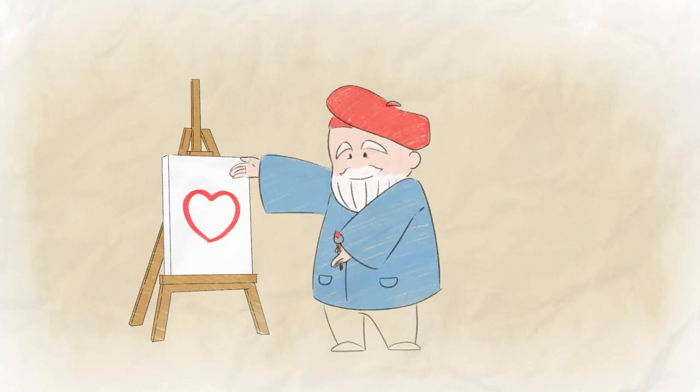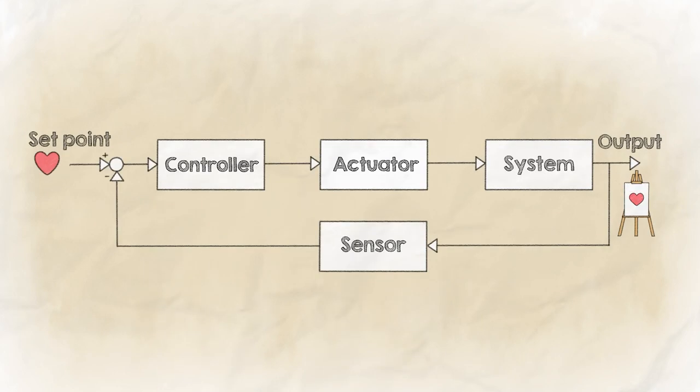The target result is a painting of a heart. In our example, one can isolate the three basic items from Leonardo: his brush, his brain, and his eyes. Each of these elements are equally necessary to perform the objective.